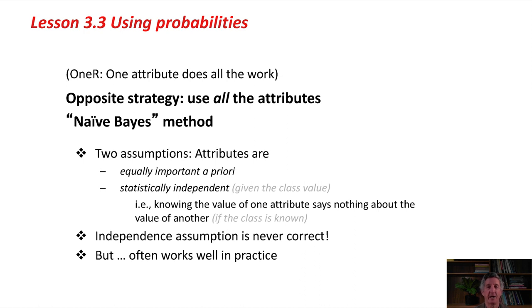This is called the Naive Bayes method. The attributes are equally important and statistically independent. That is, knowing the value of one of the attributes doesn't tell you anything about the value of any of the other attributes. This independence assumption is never actually correct, but the method based on it often works well in practice.